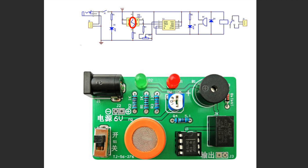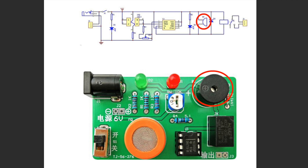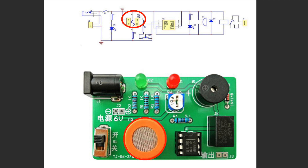After power on, when MQ3 does not detect alcohol vapor, its internal resistance is very large. The voltage drop of R3 and RW is very low, so the voltage of pin 2 of the NE555 is lower than the trigger voltage — one third of VCC. Its pin 3 output is high level, D2 is extinguished, the buzzer does not sound, and the relay does not move.